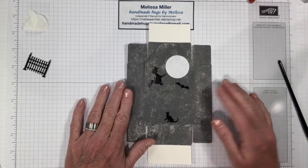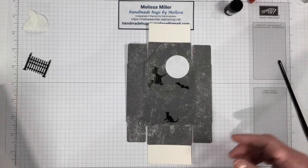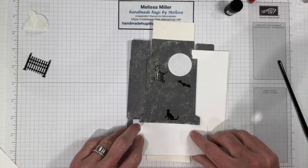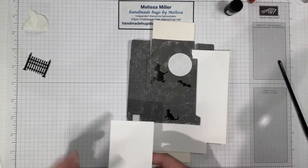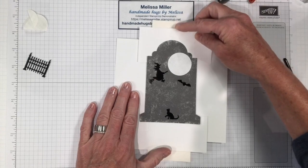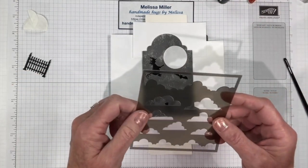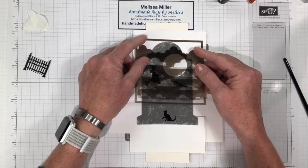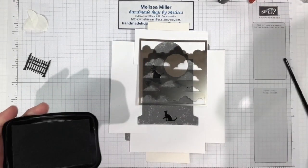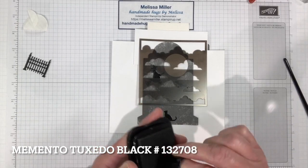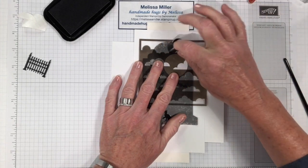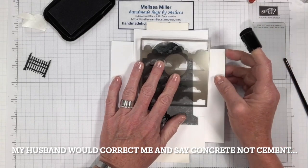So for our ink blending we're going to be using our sponge daubers instead of our blender brushes because we're going to be doing a little tiny detail and we want to be able to get in there. I'm just going to put a couple pieces of scrap paper under here just to protect the sides that I don't want the ink on. We will be using our stencils that came in the March 2021 paper pumpkin kit and we're just going to ink blend all over. We're going to be using our memento for this.